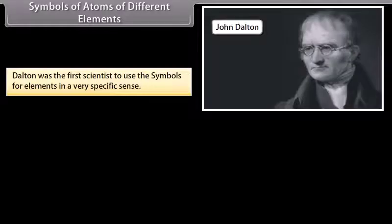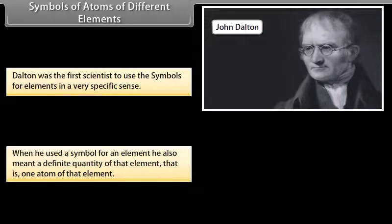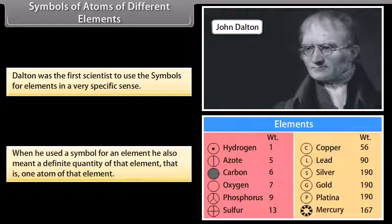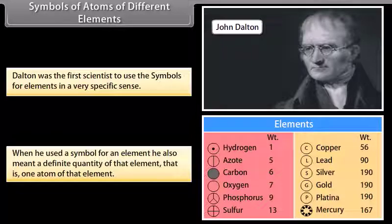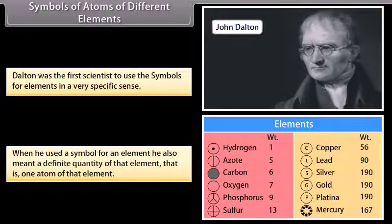Symbols of atoms of different elements. Dalton was the first scientist to use the symbols for elements in a very specific sense. When he used a symbol for an element, he also meant a definite quantity of that element, that is, one atom of that element.